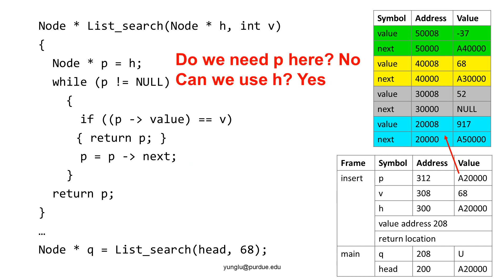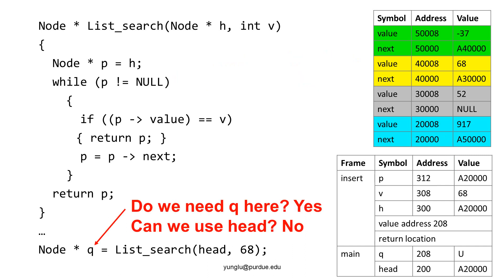Here are commonly asked questions. The first question is whether we have to create a local variable p, or can we use h instead? The answer is we do not need to create p — we can use h inside the function. If we modify h inside the search function, we will lose the first node within the function, but that is alright, because outside the search function the value of head is not changed, so we can still reach the first node. However, outside the search function we use a separate variable q to store the return value of search. We must not store the return value in head — if we modify head, we will lose the first node of the linked list.